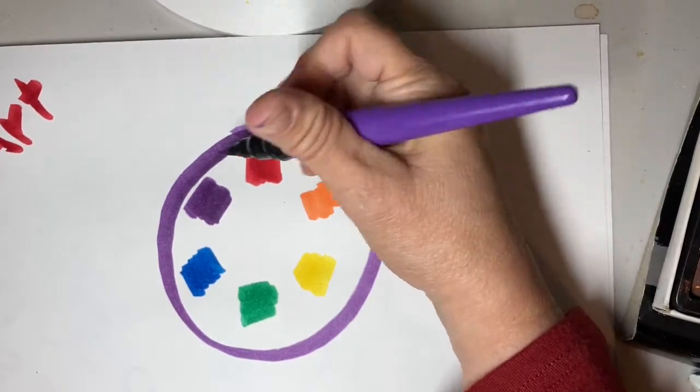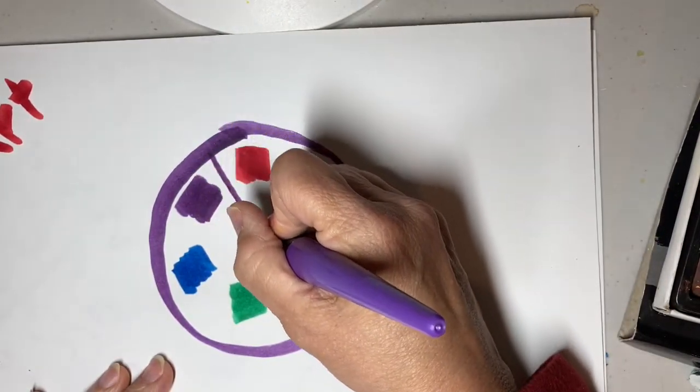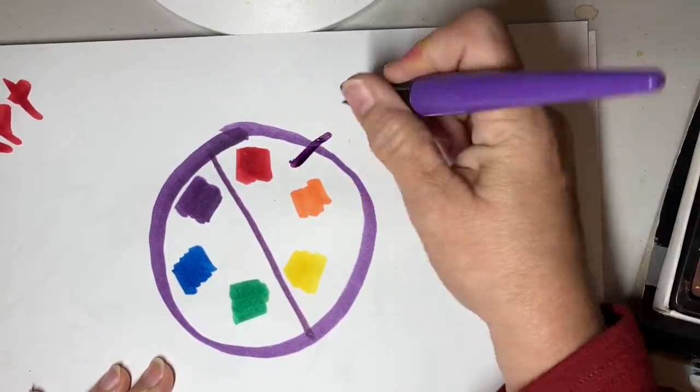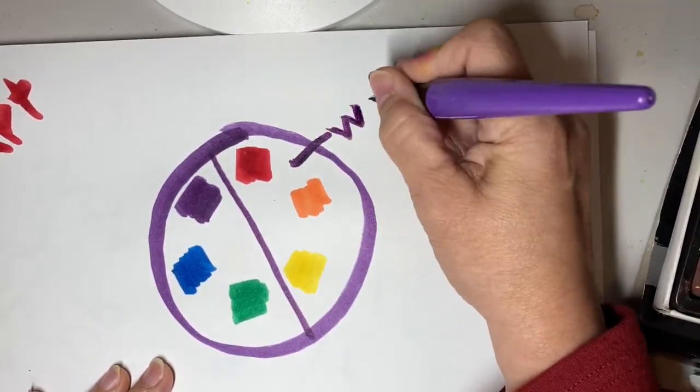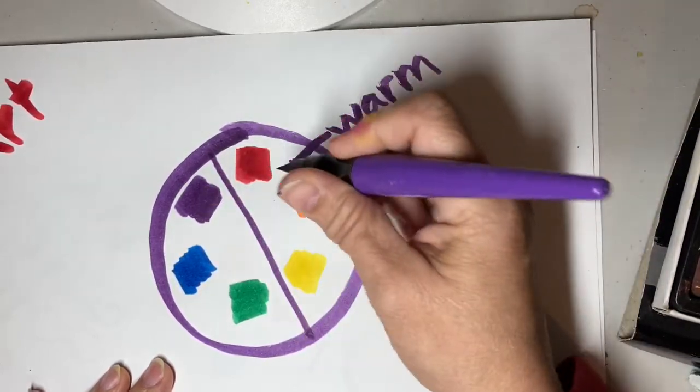But usually when artists talk about color, they're talking about something like this, and they divide the color wheel in half. So these are called the warm colors. And if you think about the sun, you can think about that.